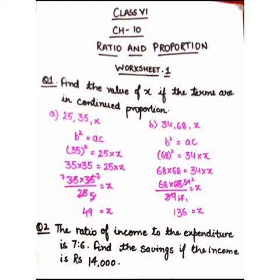We will get 35 × 35 upon 25. That is: 25 = 5×5, 35 = 5×7, so simplifying: 5×7 × 7 = 49. Therefore x = 49. This is the value of x in continued proportion.